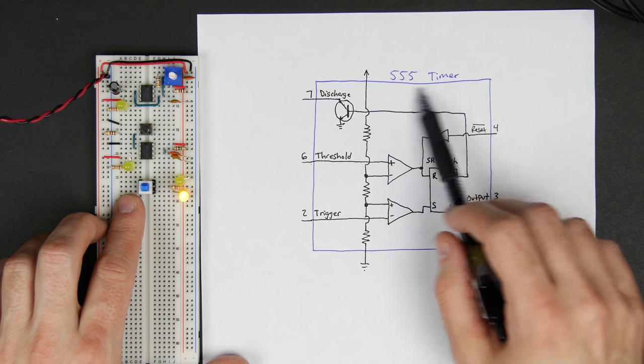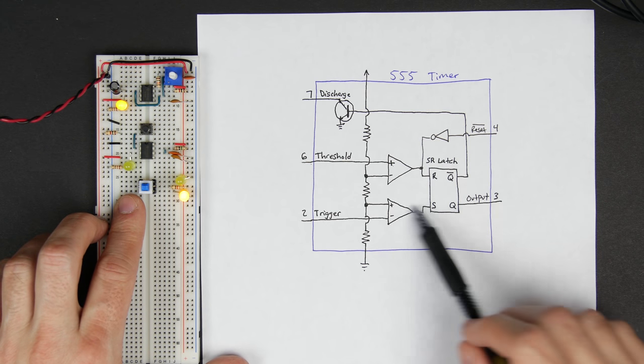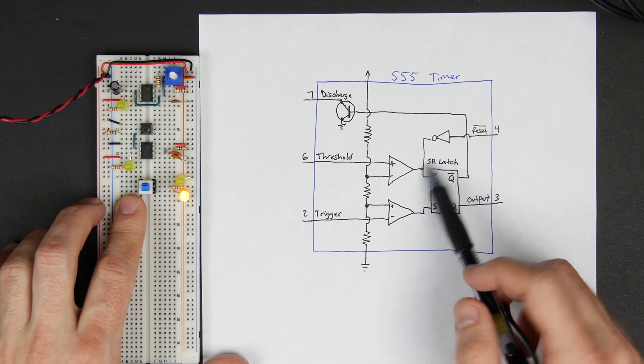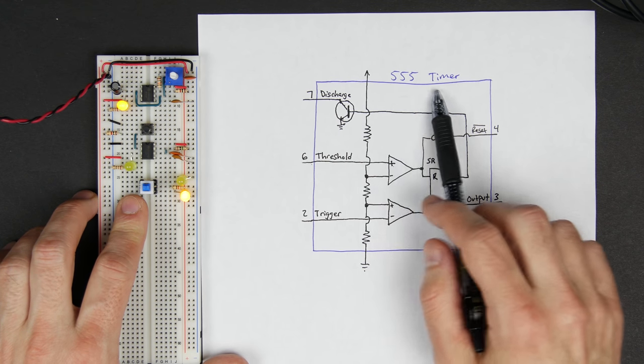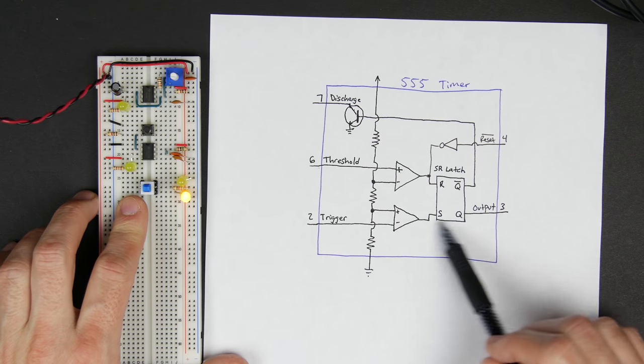So the question is, if we're using a 555, well, we could use just an SR latch on its own, which I've got a video that shows how to build one, but we can use the 555 timer, we can use its SR latch,